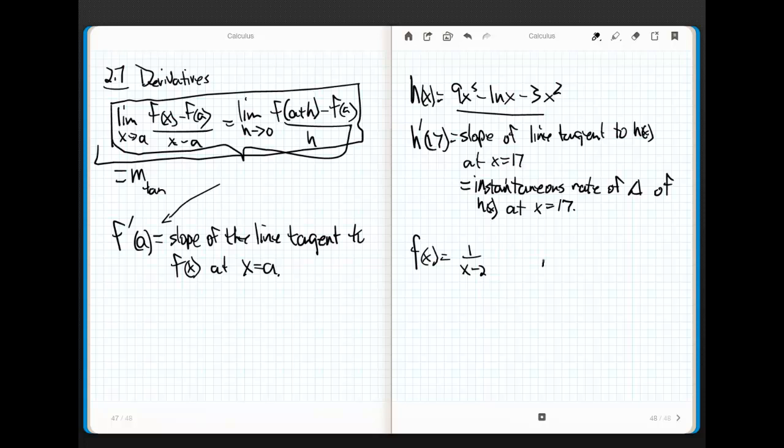If I say find f'(1), notice I'm not asking for the slope of a line tangent. I'm not asking for anything. I'm saying simply find the derivative, that's it. Well, the first thing that should pop into your head is, I'm going to find the instantaneous rate of change of f at x equals 1, or I'm going to find the slope of the line tangent to f(x) at x equals 1. Now, I may or may not use that, but that is what it is. Let's go through the process.